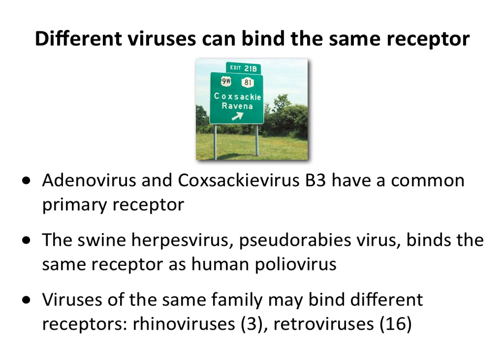A swine herpes virus called pseudorabies virus happens to bind the same receptor as poliovirus — two totally different viruses. Herpes viruses are enveloped; poliovirus is not. Yet they bind the same receptor. And viruses of the same family may bind different receptors: rhinoviruses have at least three different receptors, and retroviruses have at least 16 different receptors. There are lots of variations in virus-receptor interactions.